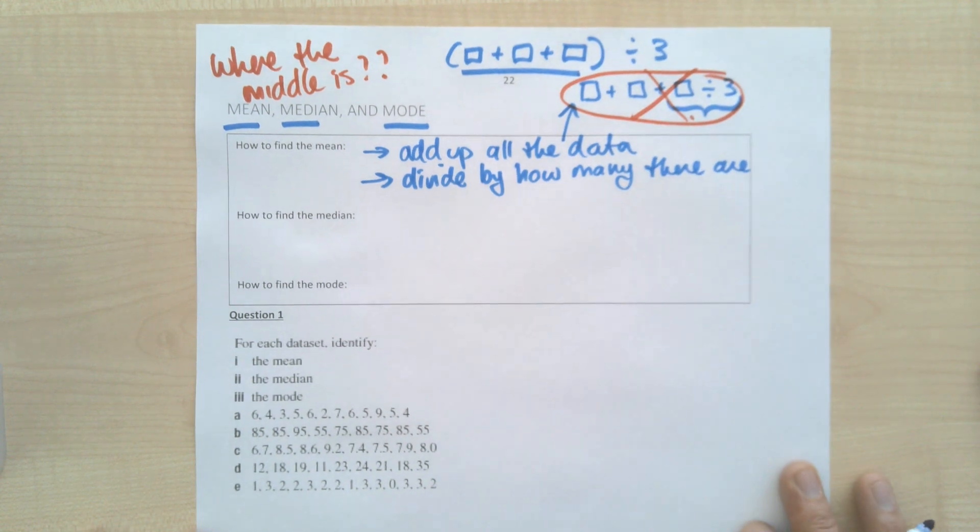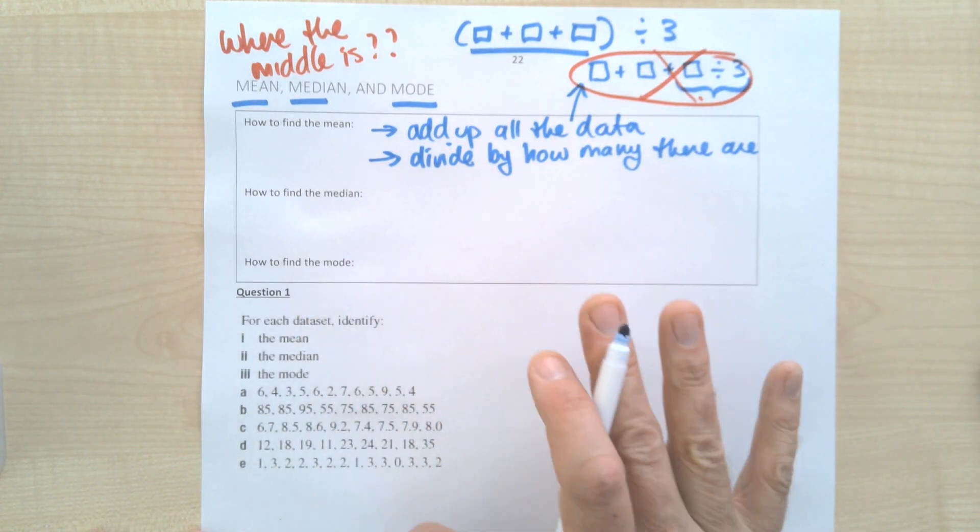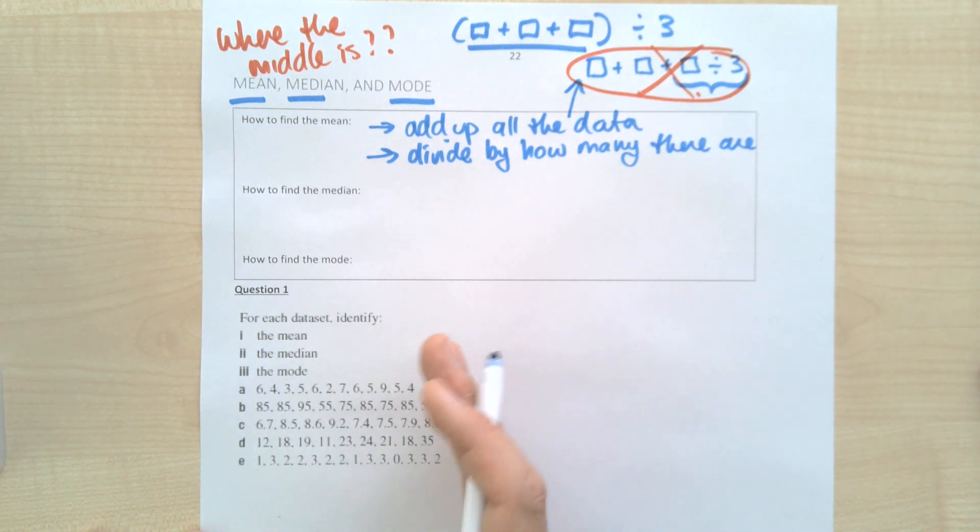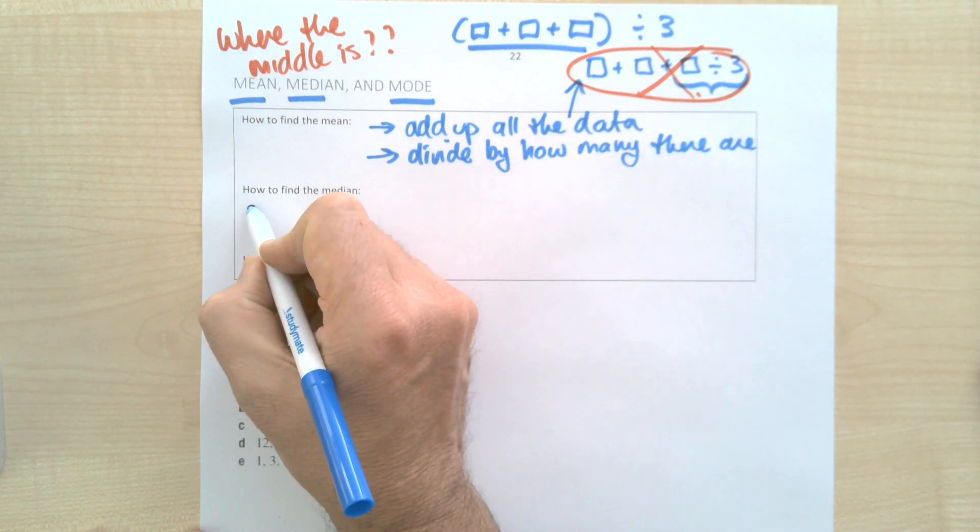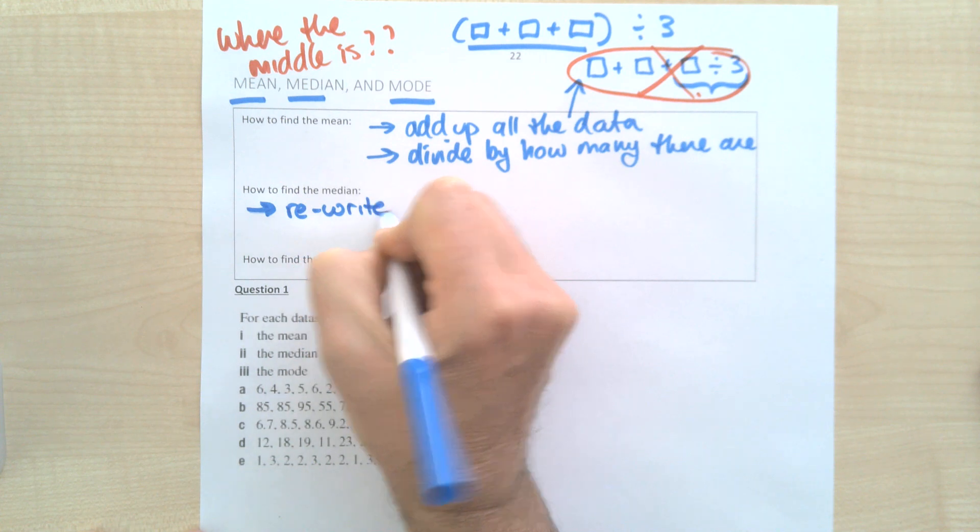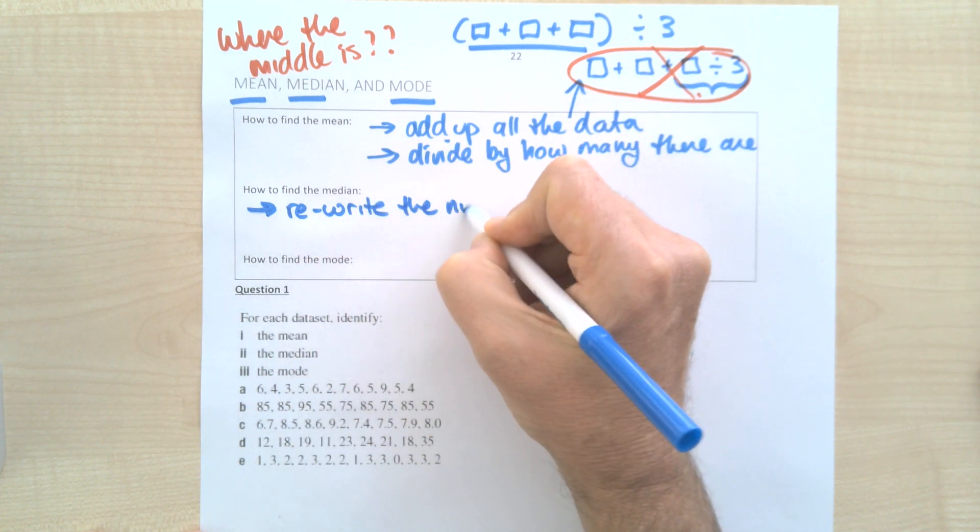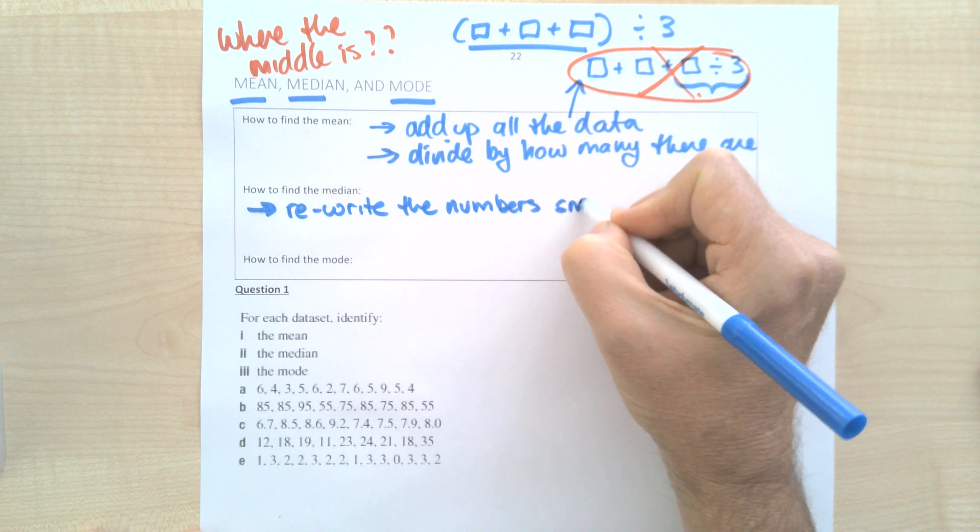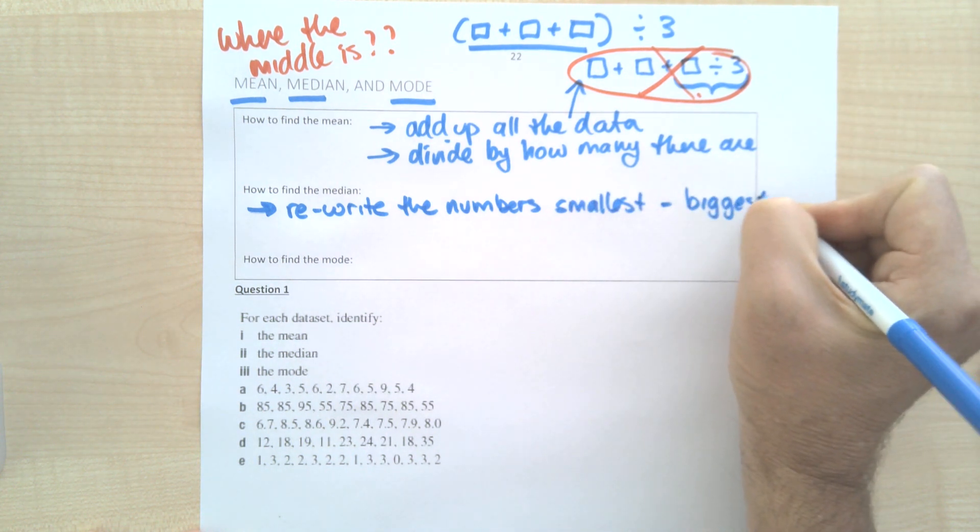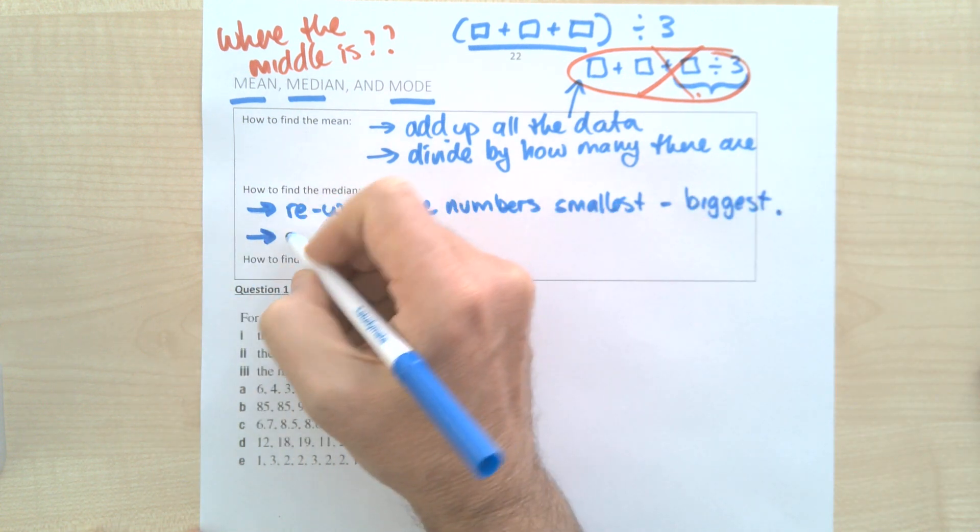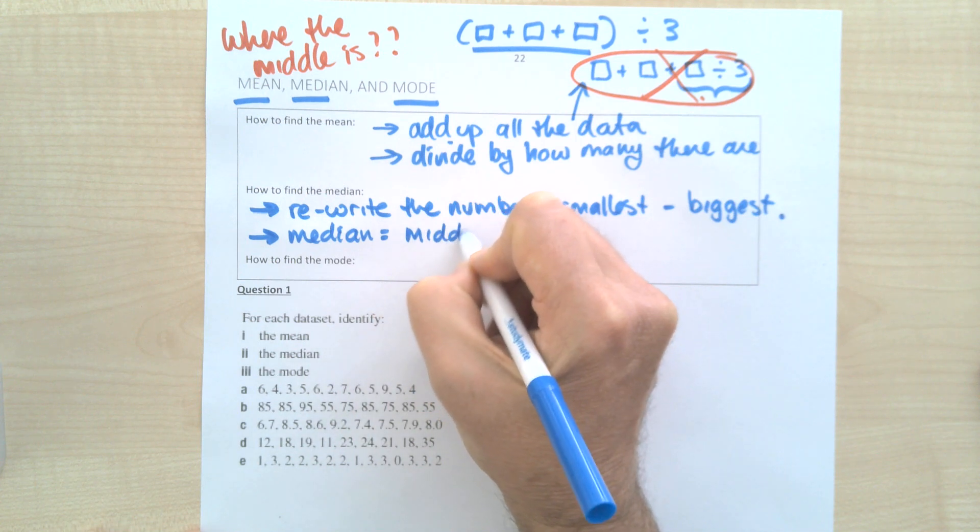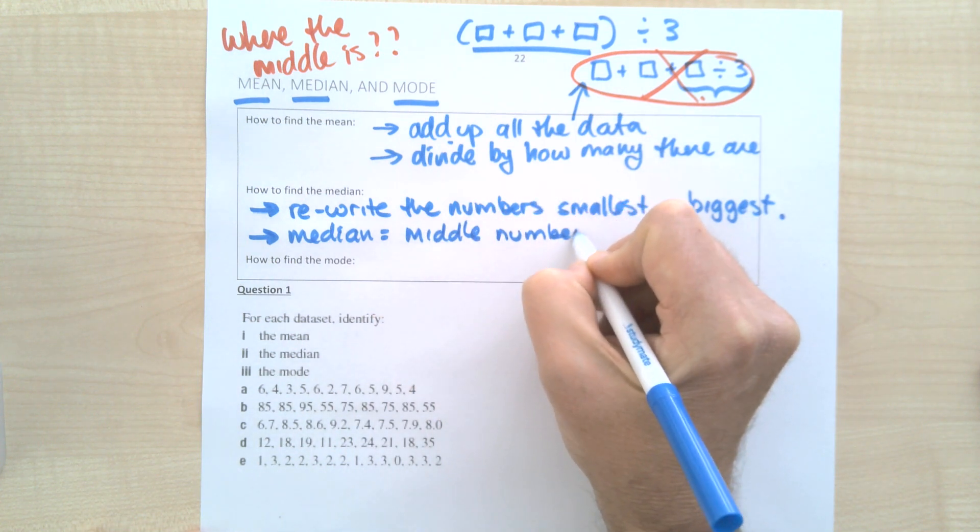Alright, so median. Median is basically the middle when everything is in order. So it's the actual middle number when everything is in order. So how do you find it? Step one: rewrite the numbers from smallest to biggest. You've got to get them in order, and then the median equals the middle number. Now more about that in a minute.